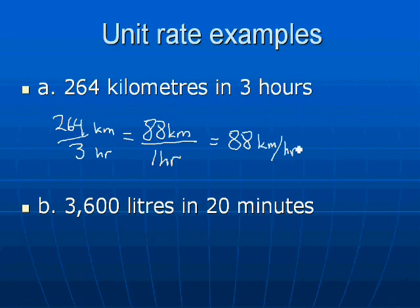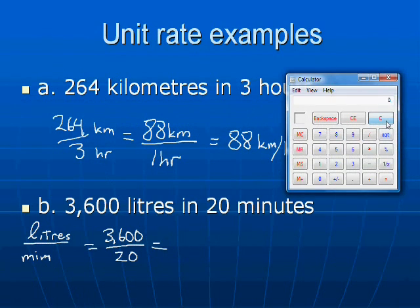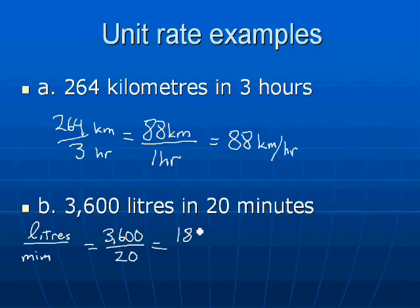Same thing if we have 3,600 liters in 20 minutes. We're going to be looking at liters over minutes, which would be 3,600 divided by 20. And again, we're going to use our calculator. 3,600 divided by 20 equals 180. So that's the same as saying 180 liters over one minute, or 180 liters per minute.